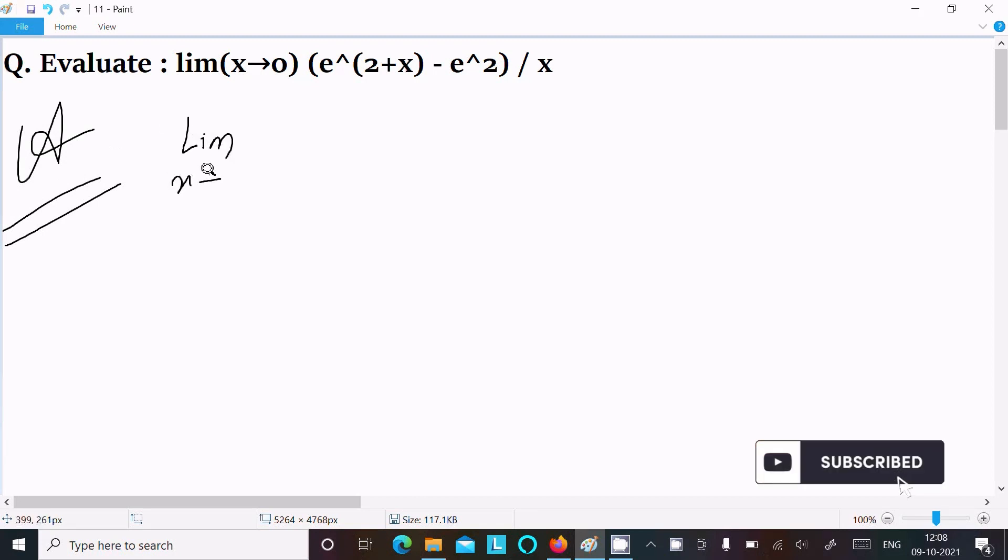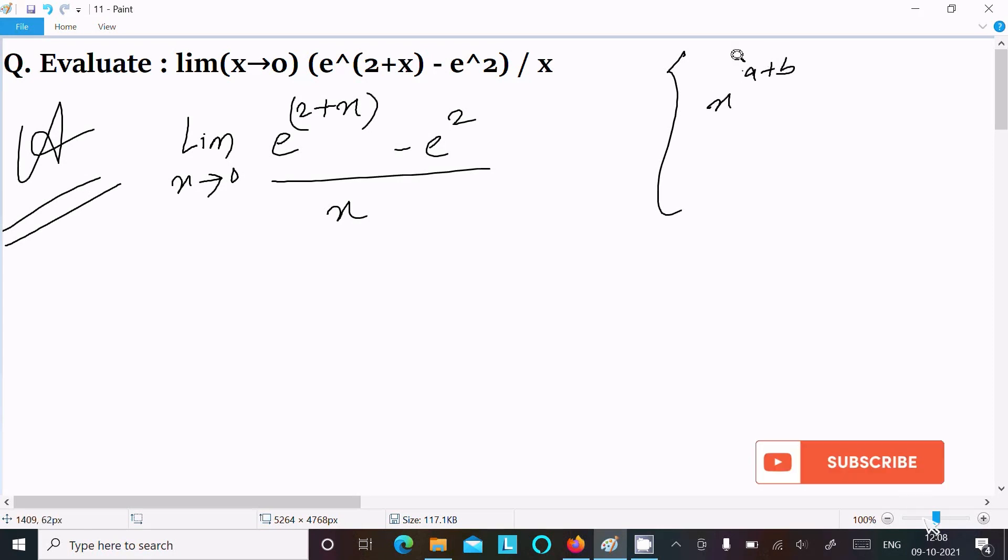x tends to 0, e^(2+x) minus e^2 divided by x. After that, we need to use this formula: x^(a+b) equals x^a times x^b. The same concept we need to apply.